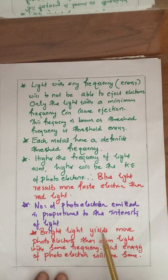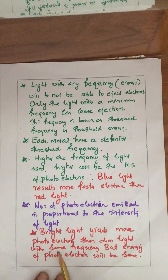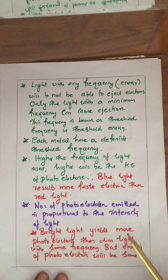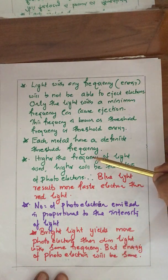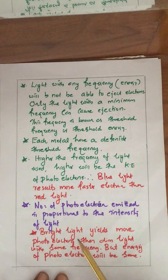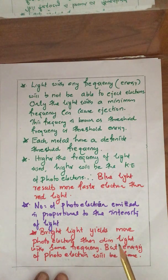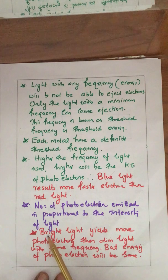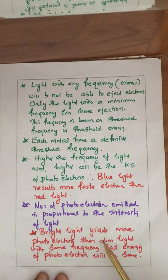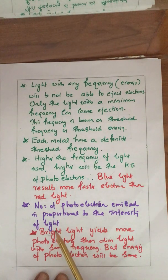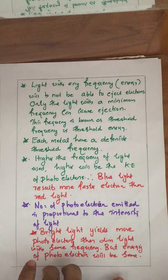Bright light yields more photoelectrons because bright light has more intensity than dim light with the same frequency. But the energy of the photoelectron will be the same — the energy of the photoelectron depends only on frequency and not on intensity. Bright and dim light produce electrons with the same kinetic energy, but bright light produces more electrons because it has higher intensity and a higher number of photons.